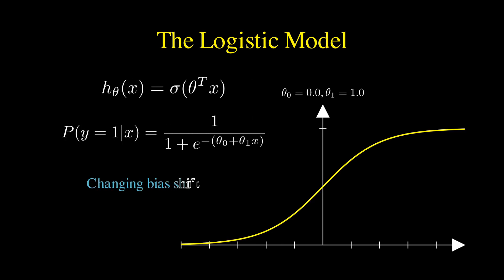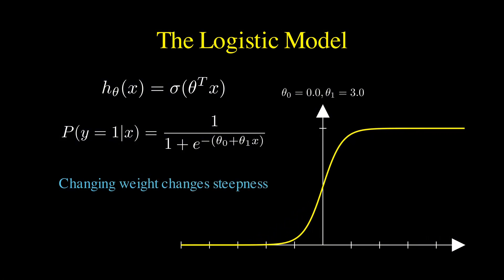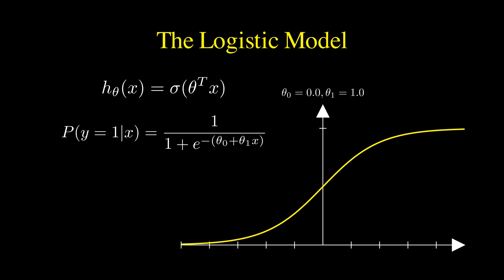Changing the bias shifts the entire curve left or right, effectively changing the threshold required to pass. Changing the weight alters the steepness, determining whether the transition from failure to success is a gradual uncertainty or a sharp, sudden jump.